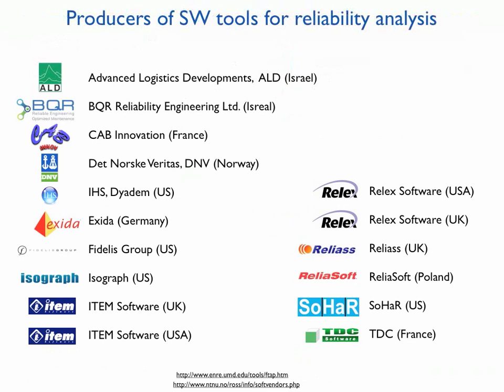If one tries to Google the word 'reliability,' they will certainly get many links to the websites of software tool vendors for reliability analysis. It is a very large international market, and you can see the main players here. Among them: Relics, ReliaSoft, Isograph, ITA and so on. All these companies are international — what you see in brackets is the location of their headquarters — but they have departments all over the world and produce software for different reliability methodologies and guidelines.